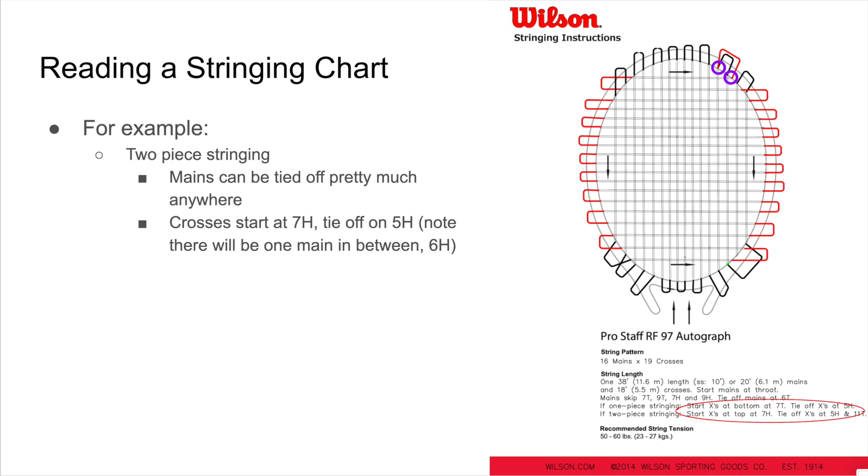The crosses start at 7H and tie-off at 5H, up at the head of the racket. For more information about stringing the crosses, please see my other videos. I will provide links in the discussion and comments section below. The crosses then finish and tie-off at the bottom or throat of the racket at 11T, shown here. While that is the recommendation, I usually just try to find a grommet hole that I can get the string through to tie-off.